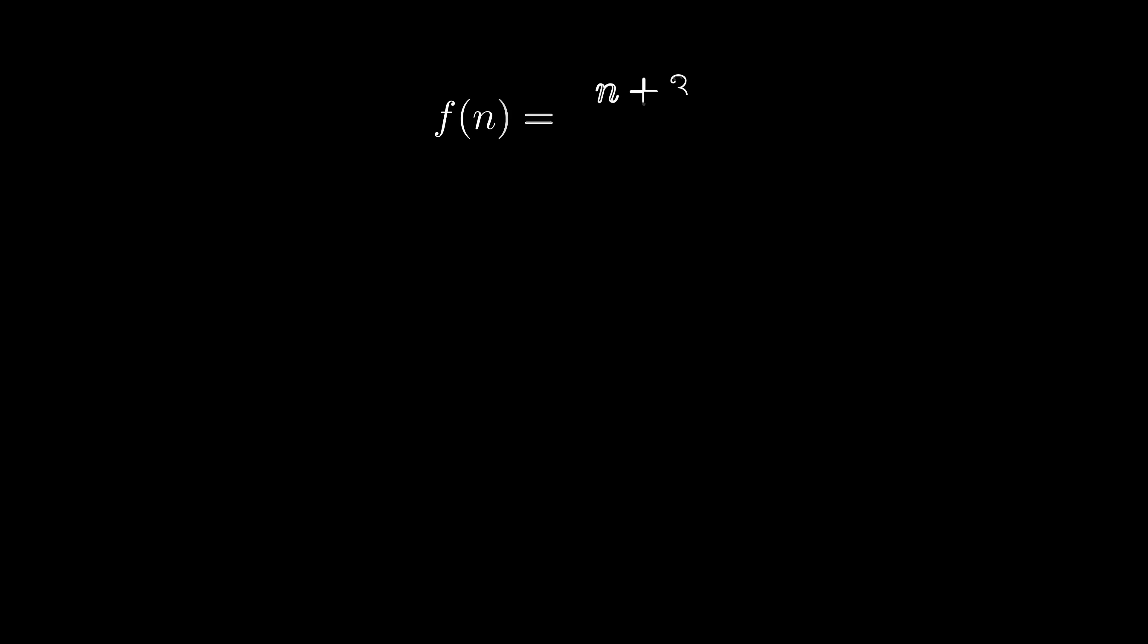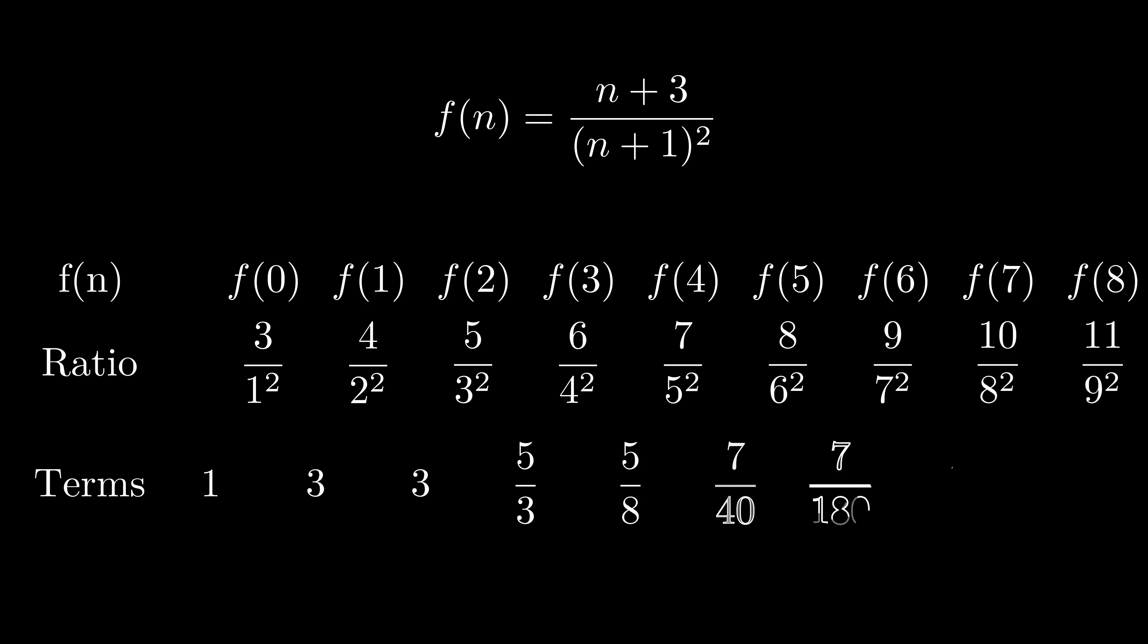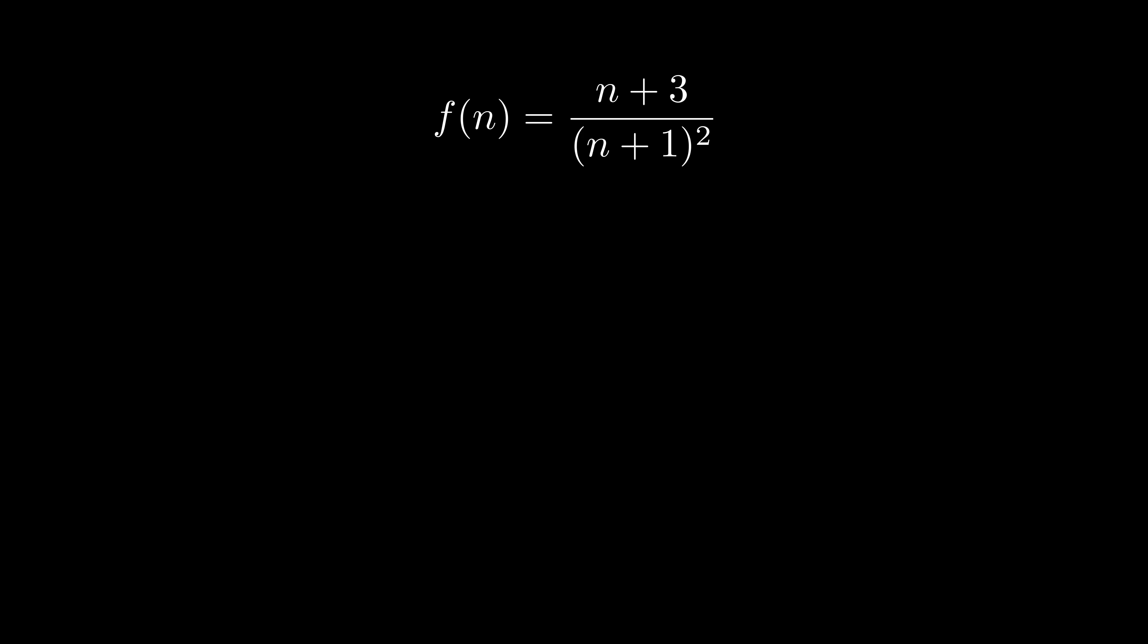So you've seen this hypergeometric function notation a lot already, so let's go over what it means and how to write functions in terms of this notation. The key lies in this function, the ratio between successive terms. Factor out the numerator and the denominator, then gather the constants added to the variable. That's what goes into the array part of the hypergeometric function.